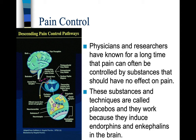Physicians and researchers have known for a long time that pain can often be controlled by substances that should have no effect on pain. These substances and techniques are called placebos, and they work because they induce endorphins and enkephalins in the brain. Do they really work? Yes, they really do — because even though they shouldn't take the pain away, if you think they do, they induce the endorphins and enkephalins, and that takes care of the problem.